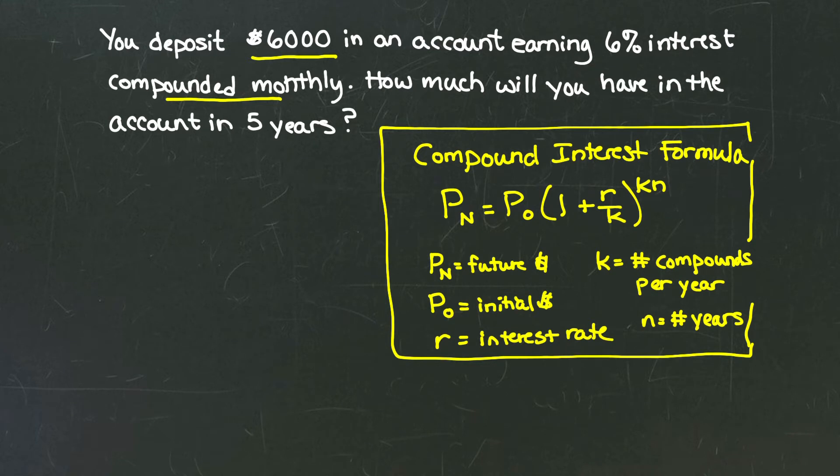What are we looking for? We're looking for how much we'll have in the account in five years. In other words, we're looking for P sub 5.